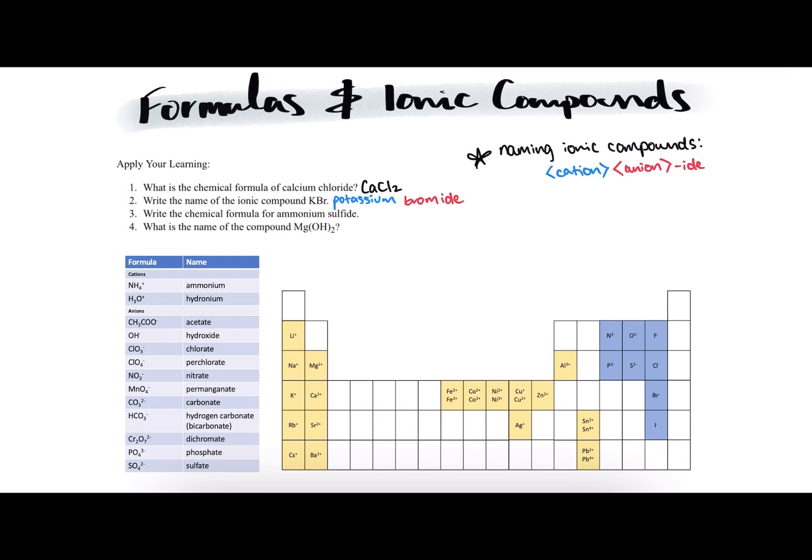Moving on to number 3, they're asking us to write the chemical formula for ammonium sulfide. Ammonium sulfide is a little bit different from calcium chloride in that it uses a polyatomic ion, which is an ion in which there is more than one atom that is grouped together and has a cumulative charge.